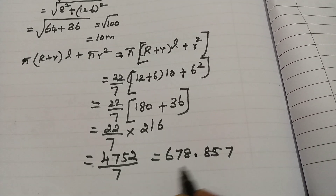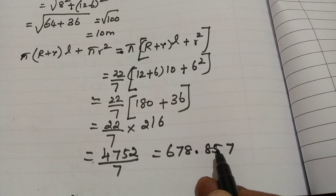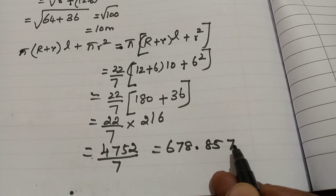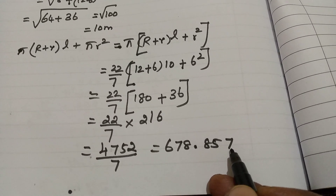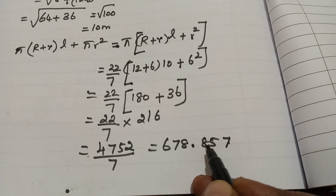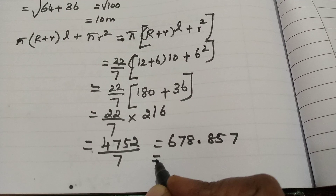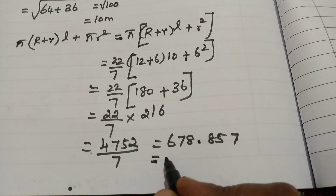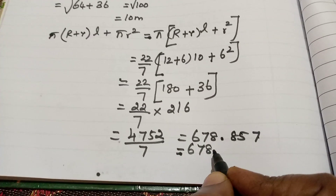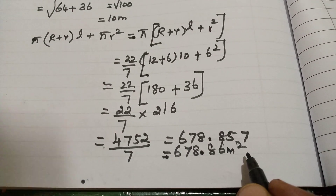After the decimal, the second digit is 5 and the third digit is also 5 or more, so rounding up we get 678.86. Which equals 678.86 meter square.